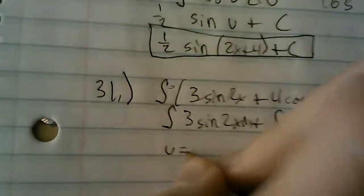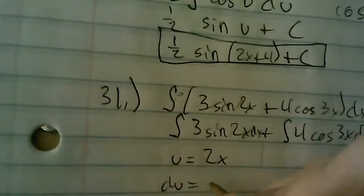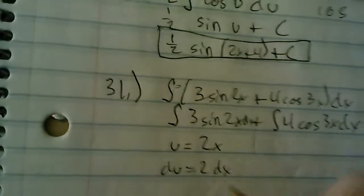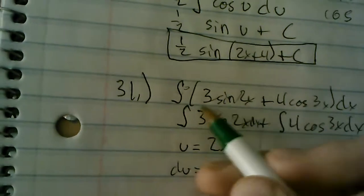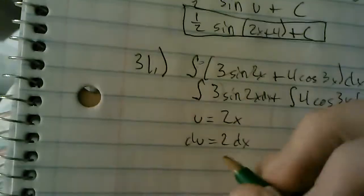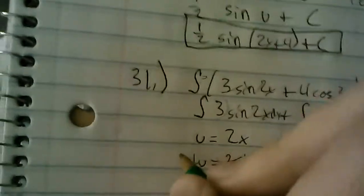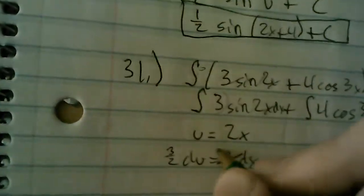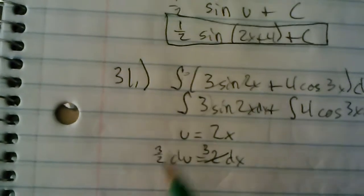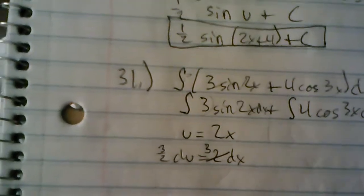So, we'll use u for this one. u equals 2x. du equals 2dx. That's the derivative. Right now we have a 3 as this term right here. So, how do we make 2 three? We multiply by three halves. So, three halves du equals 3dx.